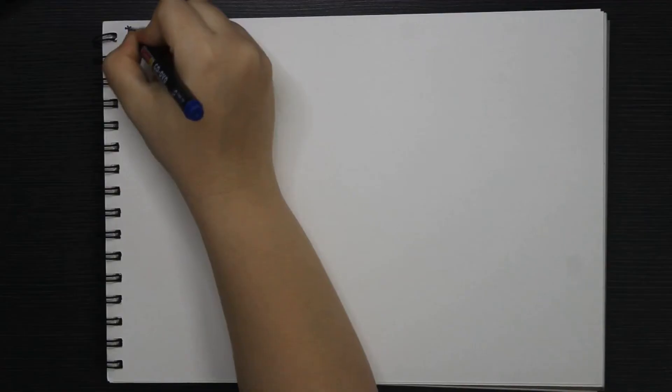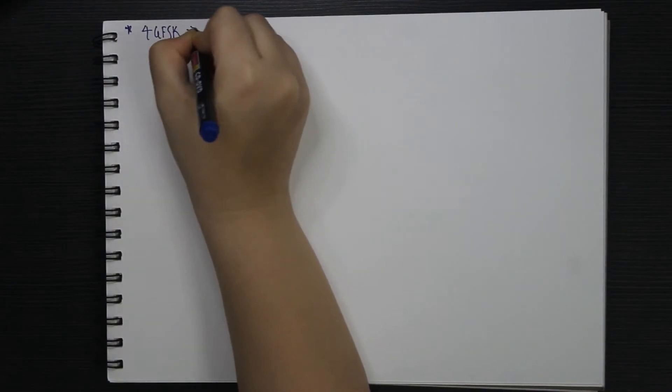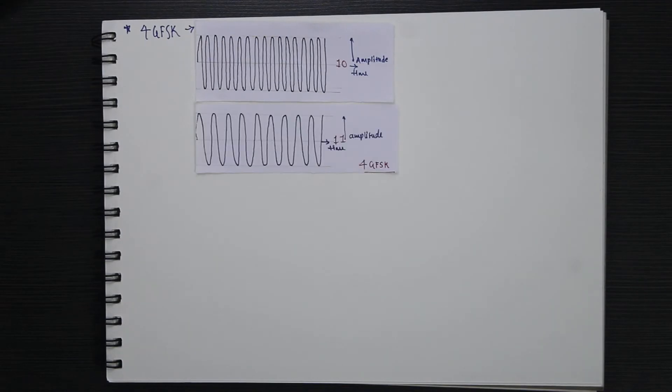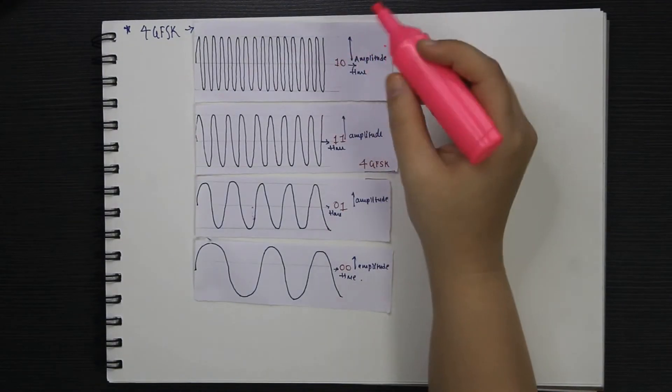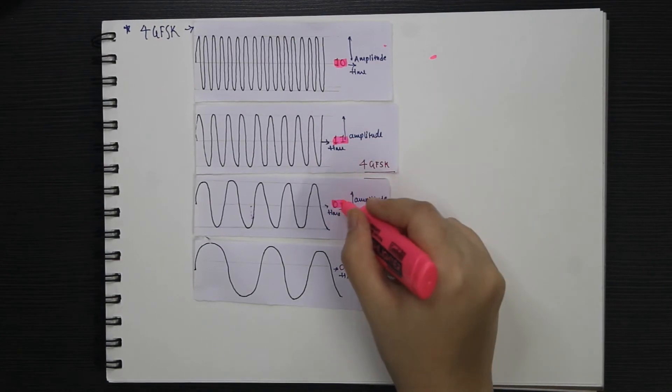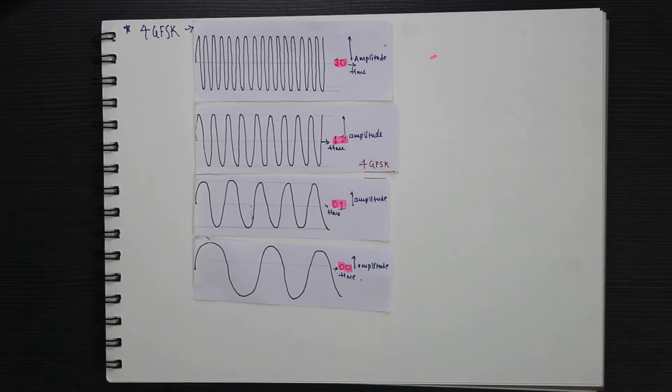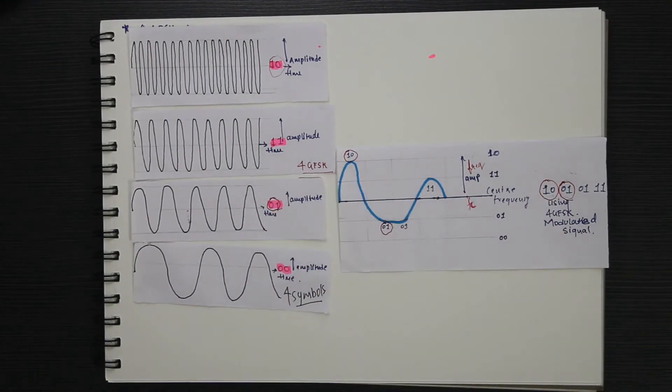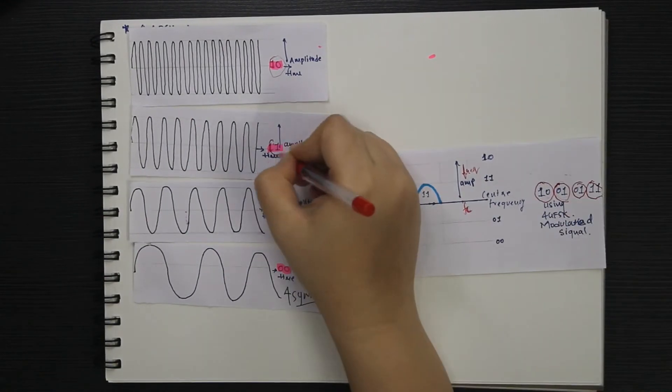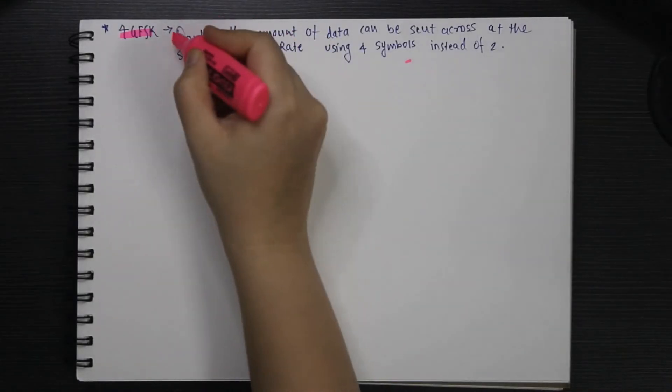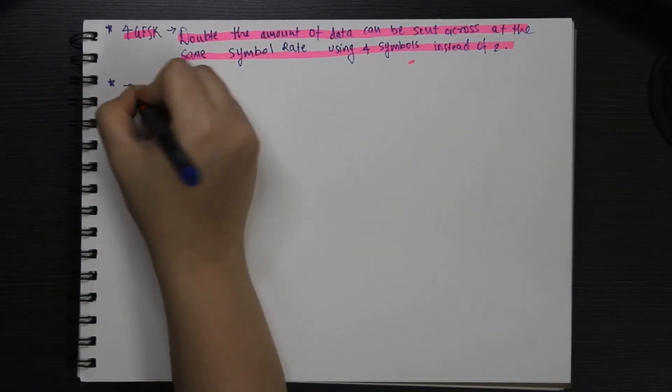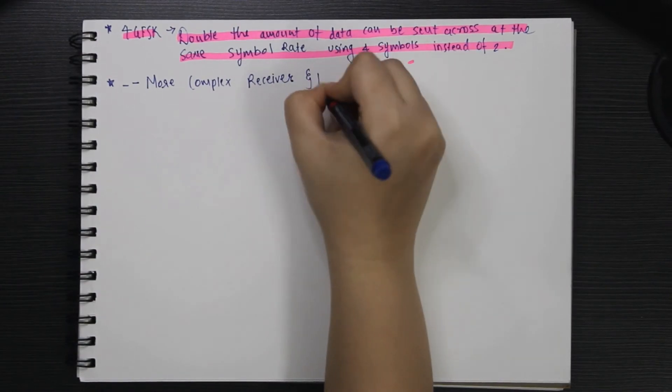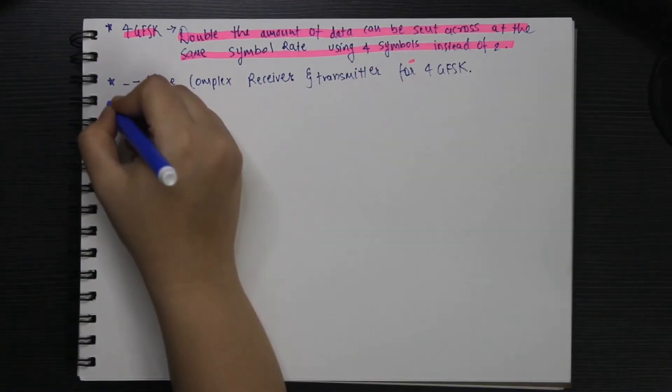Using a 4GFSK modulation scheme, double the amount of data can be sent across at the same symbol rate by using 4 distinct symbols instead of 2. However, this increase comes at a cost as 4GFSK requires more complex transmitters and receivers.